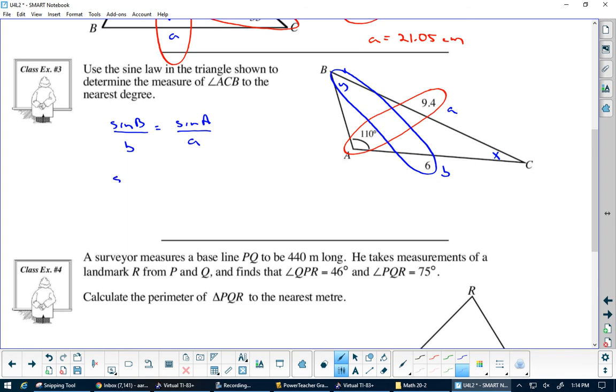First of all I am finding an angle on this one, so that's a little bit different. I am looking for big B, so why don't I put that sine B over b, because this would be b here, right? And this would be a. Equals sine A over a. Let's fill in what we know: sine B over six would equal sine 110 over 9.4.